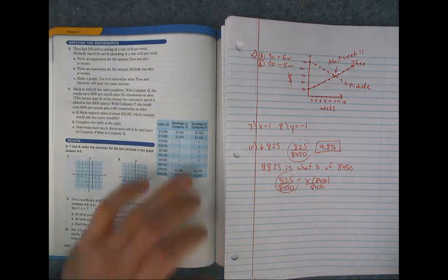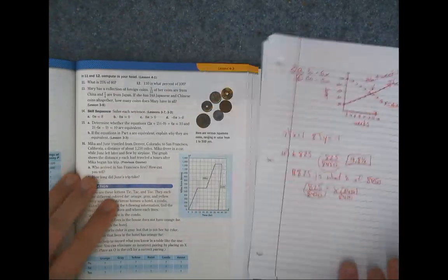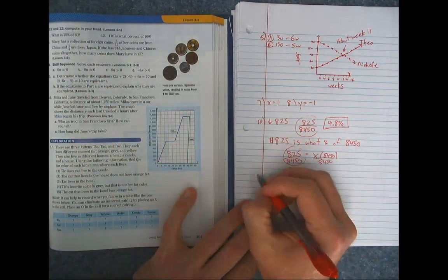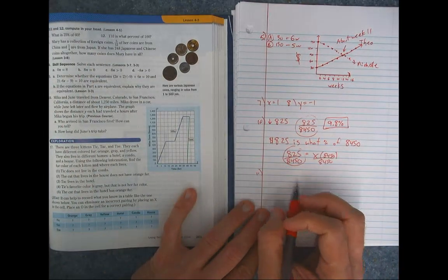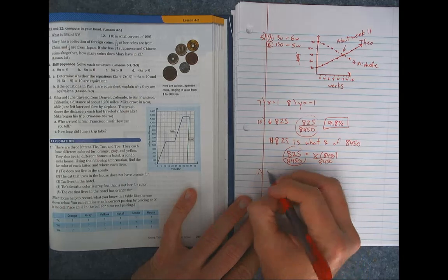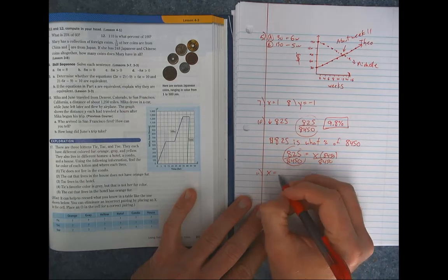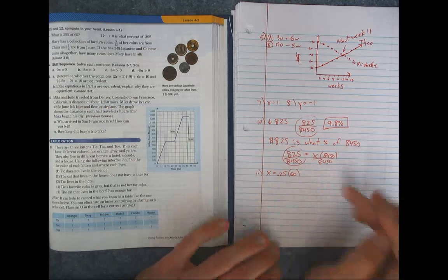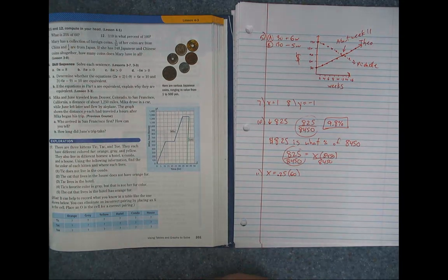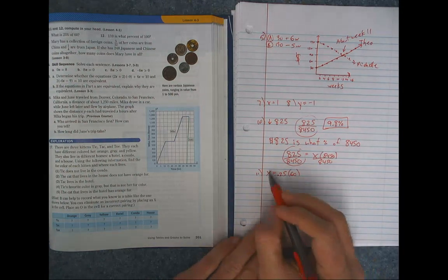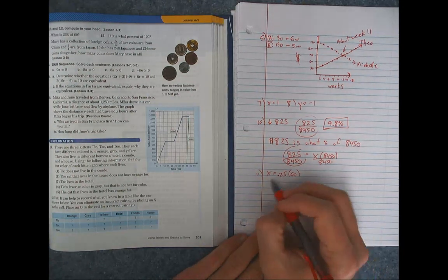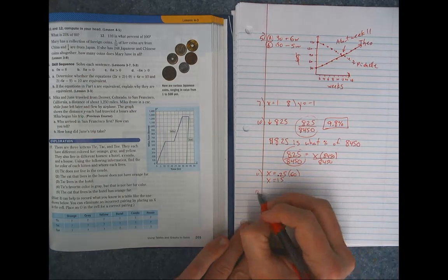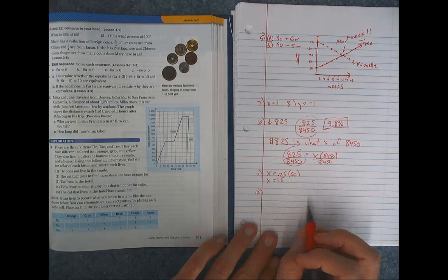All right, number 11 and 12. So 11 and 12 go back to your basic writing the percent equation. So what is, so X is 25% 0.25 of 60. So all we have to do is multiply 0.25 times 60. We don't have to divide anything. X is already by itself. Just go ahead and multiply and get the answer. So X equals 15.